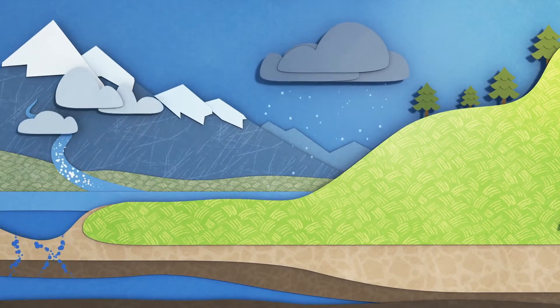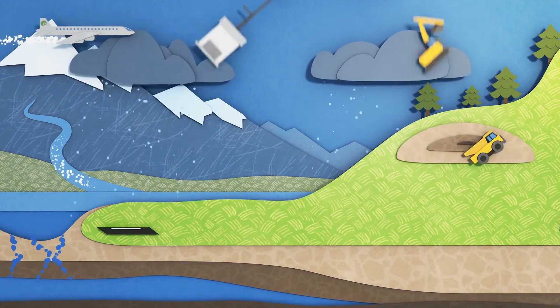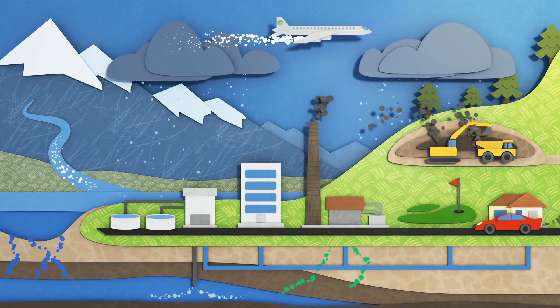Here's the Earth's water cycle, where the water comes from and where it goes. It seems simple, but it's become more complicated over time.